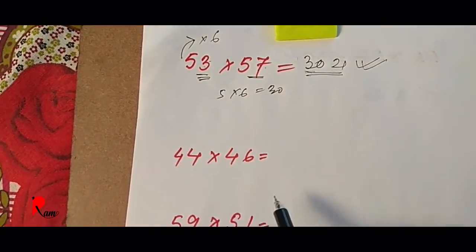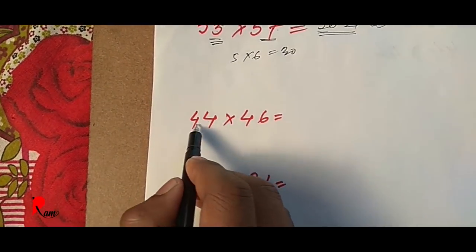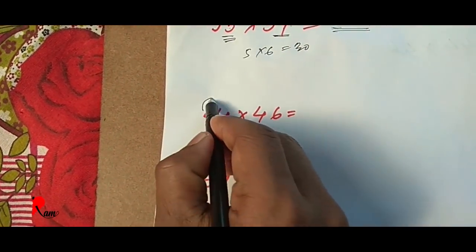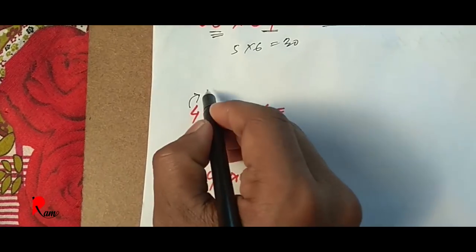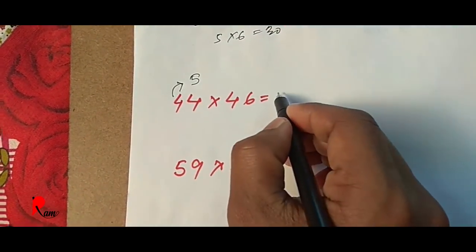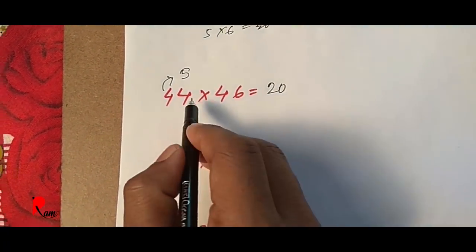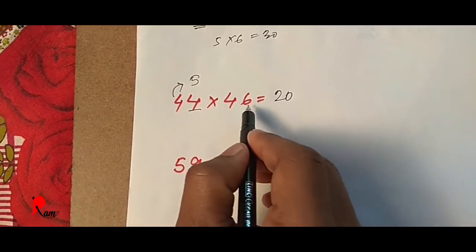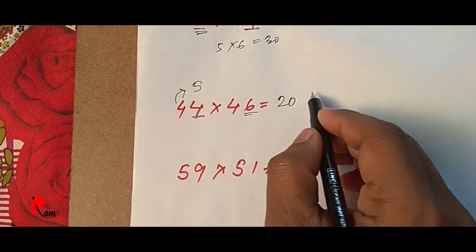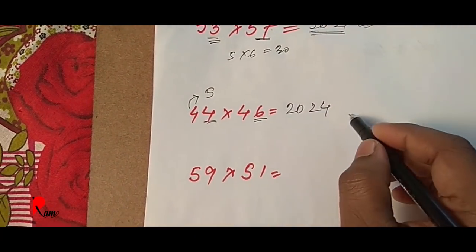So if you say the number of 2 is not equal: 44, 46 — the same. 4 x 5 is 5, 4 x 5 is 20. And 4 x 6 is 2, 6 digits. And the number of 2, 4 is 24.